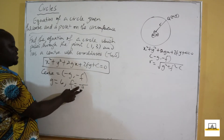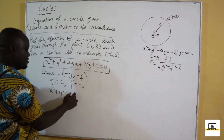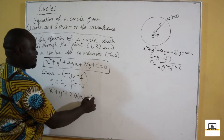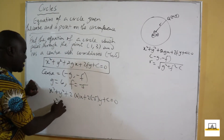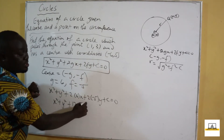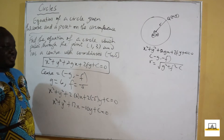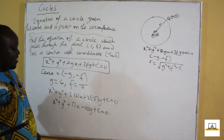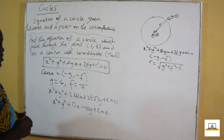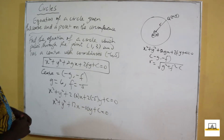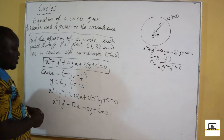Using G equals 6 and F equals minus 5, we substitute into the general equation. We get X squared plus Y squared plus 2 times 6 times X plus 2 times minus 5 times Y plus C equals zero, which simplifies to X squared plus Y squared plus 12X minus 10Y plus C equals zero.